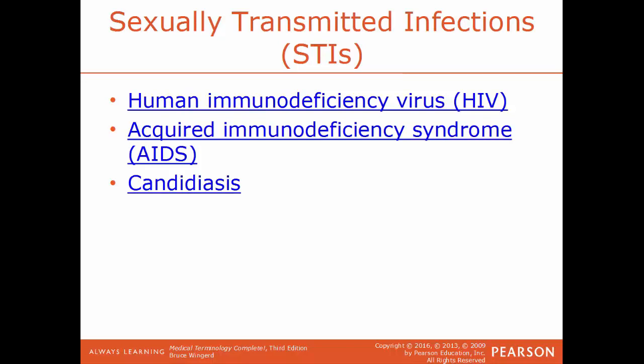Now we'll talk about some sexually transmitted infections or STIs. HIV, human immunodeficiency virus, is the virus that leads to AIDS, acquired immunodeficiency syndrome. These two are not the same thing — AIDS is the disease caused by the virus HIV. You could be HIV positive and never develop AIDS. Having AIDS means you have a very compromised immune system where the smallest thing can make you incredibly sick.